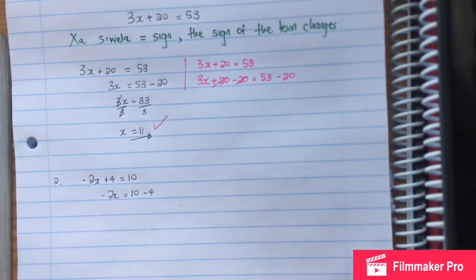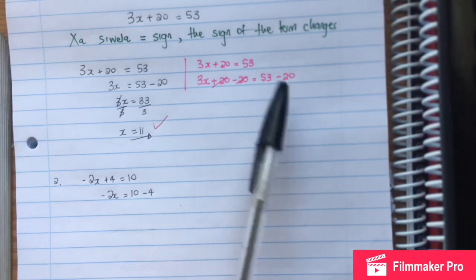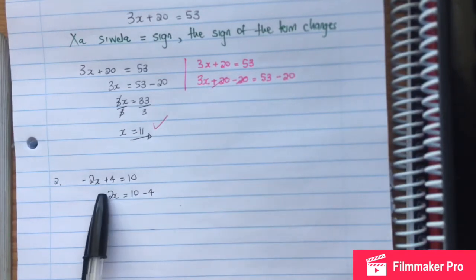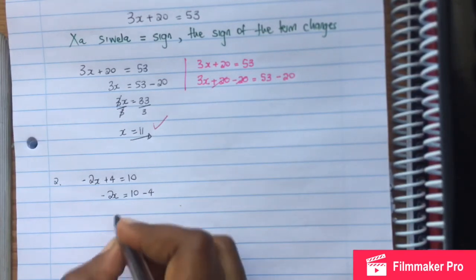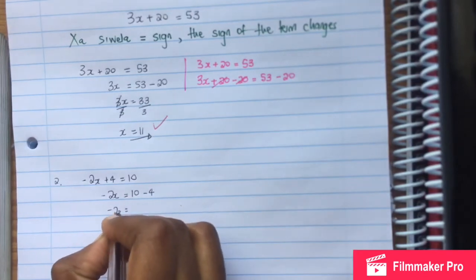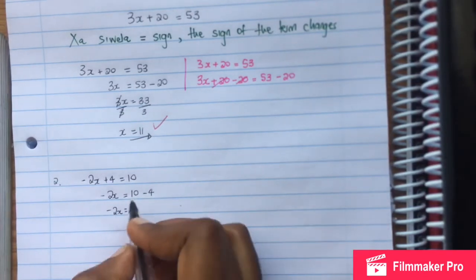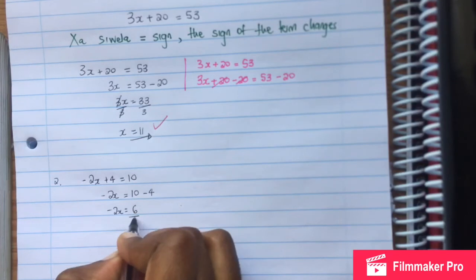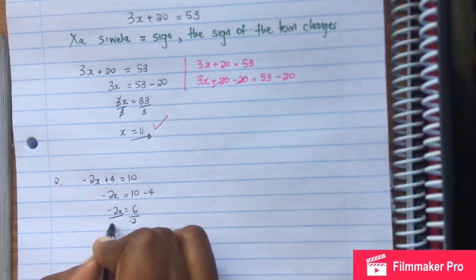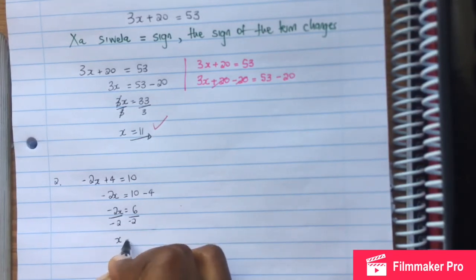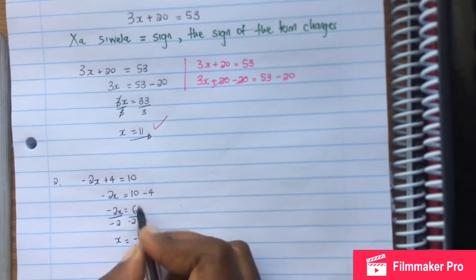So 4 will move to the other side and become minus 4. Then we have negative 2x. This gives us negative 2x equals 10 minus 4, which is 6. Divided by negative 2, divided by negative 2, and x is equal to negative 3.